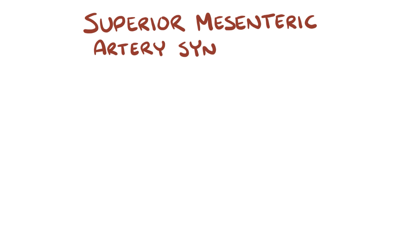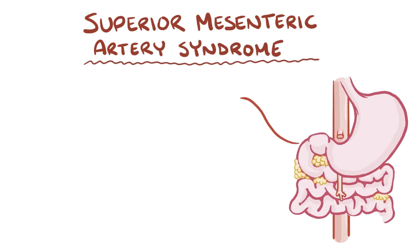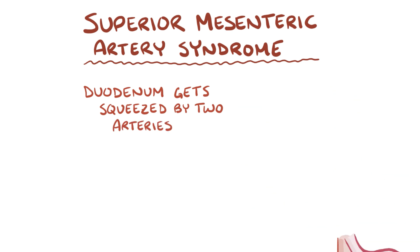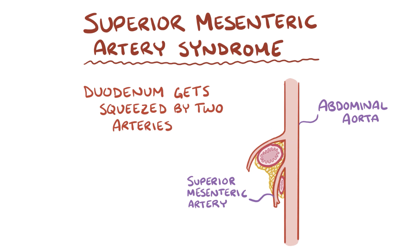Superior mesenteric artery syndrome is when the first part of the small intestine, which is the duodenum, gets squeezed between two large arteries — the abdominal aorta and the superior mesenteric artery. When the duodenum gets squashed, food can't easily pass by, and this leads to intestinal obstruction.